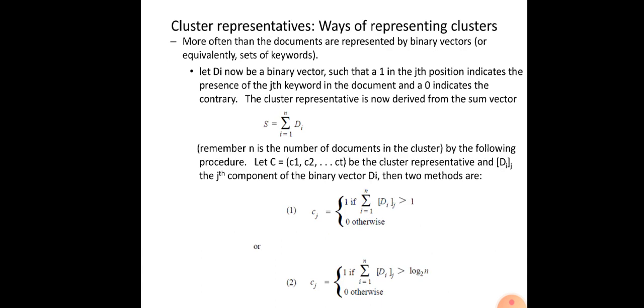Another way is by using binary representations or binary vectors of the documents. More often we look at documents as binary vectors, or equivalently as sets of keywords. Here di is a binary vector such that a 1 in the jth position indicates the presence of the jth keyword in the document, and 0 indicates its absence. The cluster representative is derived from the sum vector: Σ(i=1 to n) di, where n is the number of documents in the cluster.